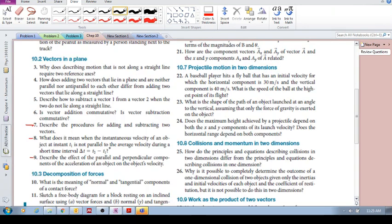What's the next question? What does it mean when the instantaneous velocity of an object at instant T1 is not parallel? So, we're looking at instantaneous velocity is not parallel to the average velocity during a short time interval, delta T.